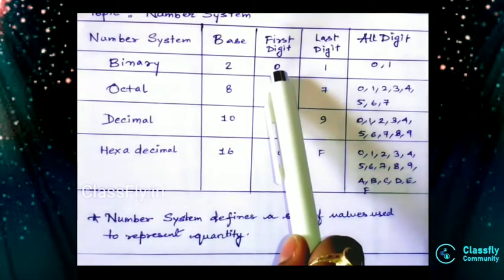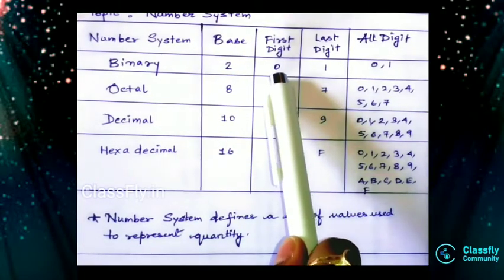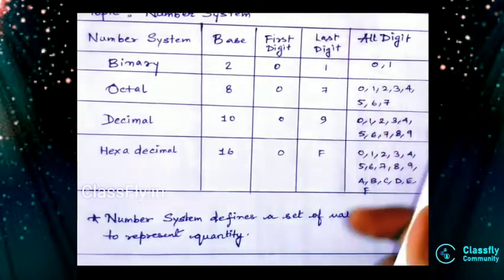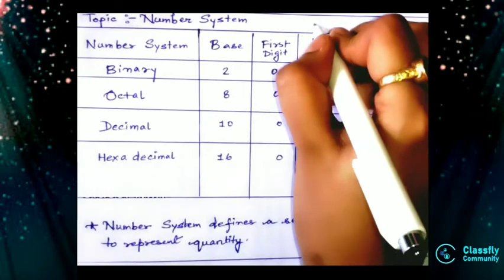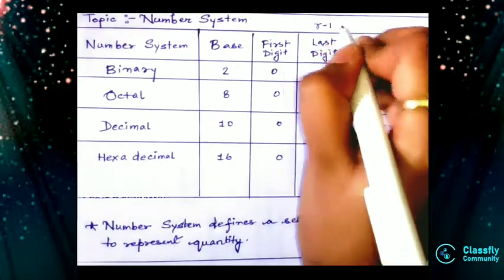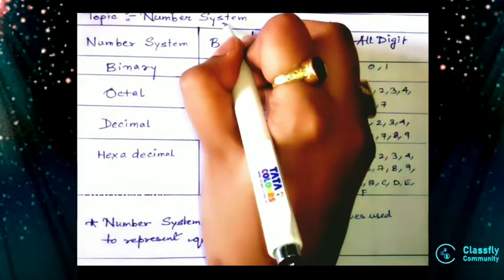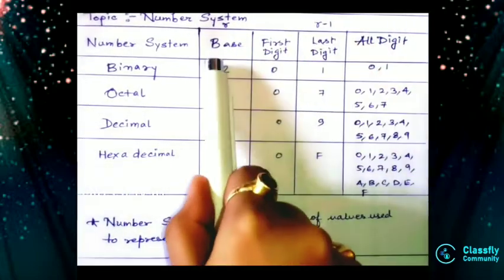As it is 2, binary is for two numbers, so if we start with 0, the next number will be 1. But for octal it will be 7. Basically, the last digit is r minus 1.